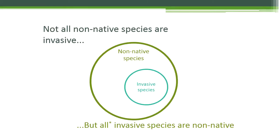The invasive species circle is totally enclosed in the non-native species circle, meaning that all invasive species are non-native. A simple way of stating this is that not all non-native species are invasive, but all invasive species are non-native.